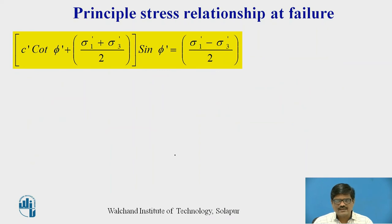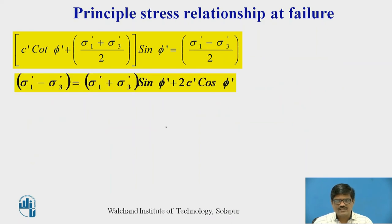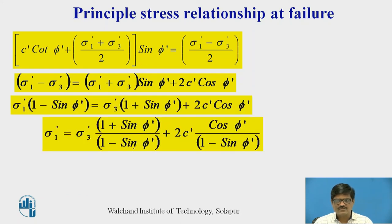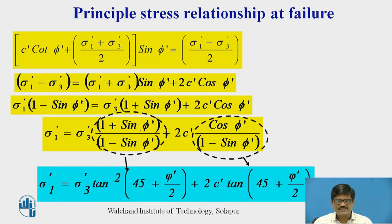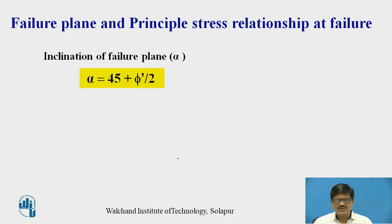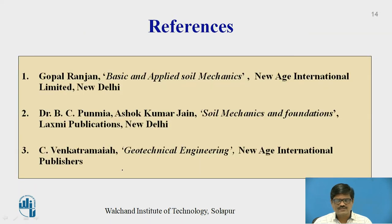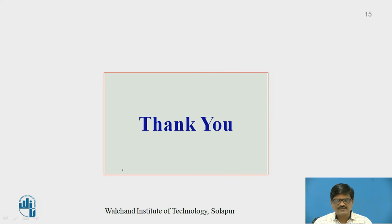Rearranging and simplifying, we get two important relationships: the inclination of failure plane is 45 + phi/2, and the principal stress relationship at failure is sigma 1 = sigma 3 × tan²(45 + phi/2) + 2C × tan(45 + phi/2), using the trigonometric identities that (1 − sin phi)/(1 + sin phi) corresponds to tan²(45 + phi/2) and the C term similarly simplifies. These are the references. Thank you very much.